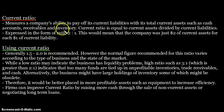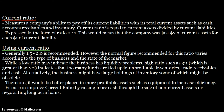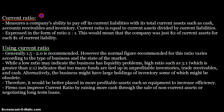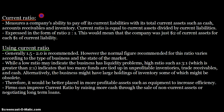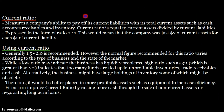The current ratio measures a company's ability to pay off its current liabilities with its total current assets, such as cash, accounts receivables, and inventory. As the name suggests, current ratio is all about current liabilities and current assets — it tells you if the business can pay off its current liabilities using its current assets. The formula is: current ratio equals current assets divided by current liabilities.